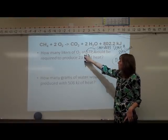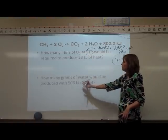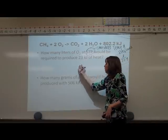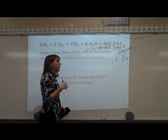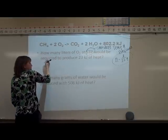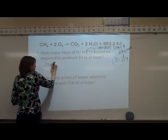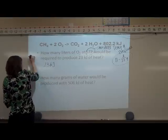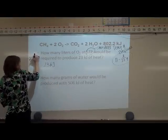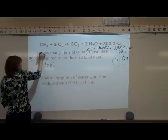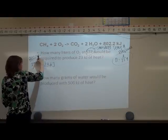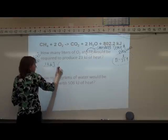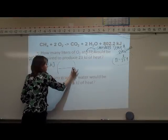How many liters of O₂ would we be able to make if we made 23 kilojoules of heat? We have to take our kilojoules, convert it to moles, and then convert to our liters. We're going to start with 23 kilojoules. We know that 802.2 kilojoules equals 2 moles of O₂. We're going to write that in our conversion factor.